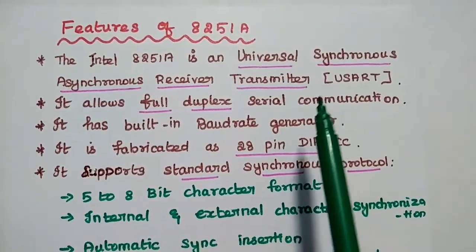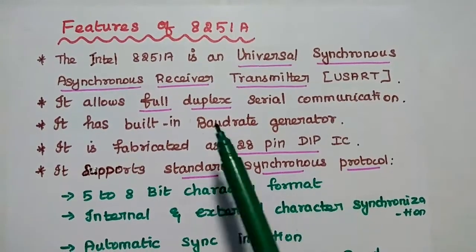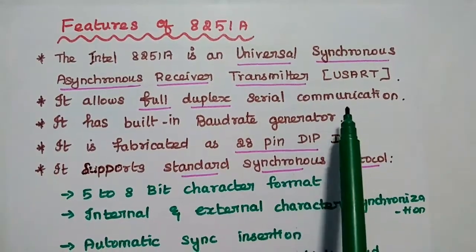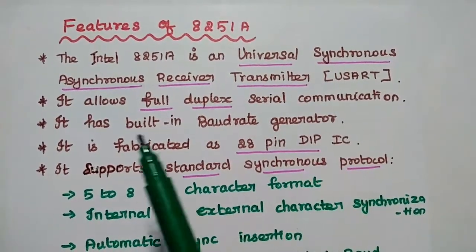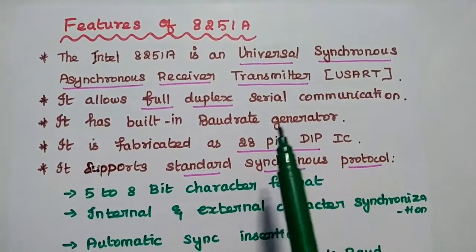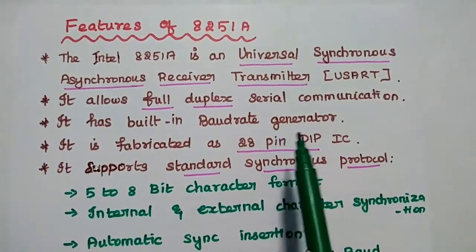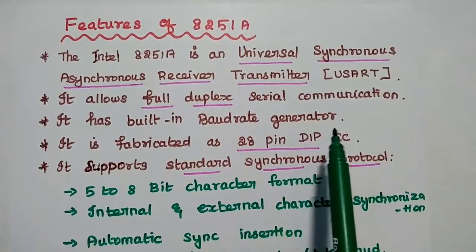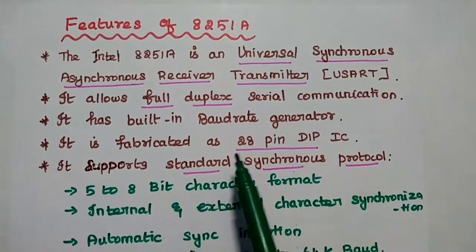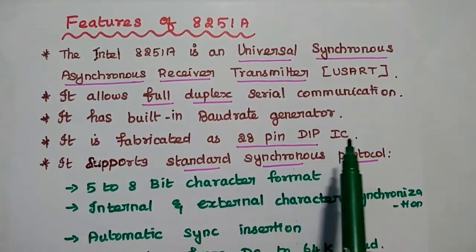It is mainly used for serial communication interface. It allows full duplex serial communication. It has a built-in baud rate generator. Baud rate means the rate at which the information is transferred in serial communication. It is fabricated as a 28-pin dual inline package IC.